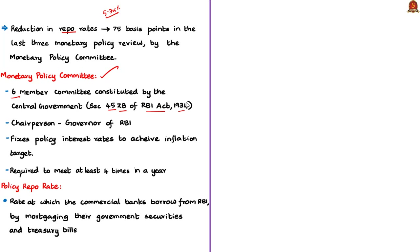Out of the six members of the Monetary Policy Committee, three are from the RBI and three are nominated by the central government. The Committee is headed by the Governor of RBI, who is its chairperson. This Committee fixes the policy interest rates to achieve inflation targets and is required to meet at least four times a year as per the RBI Act of 1934.